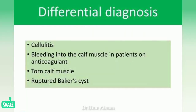The differential diagnosis for DVT includes cellulitis, bleeding into the calf muscle in patients on anticoagulants, torn calf muscles, and ruptured Baker's cyst. These are all differential diagnoses for deep vein thrombosis.